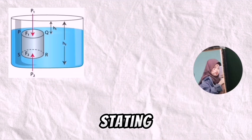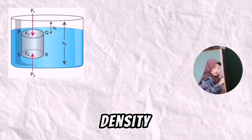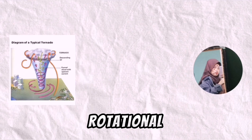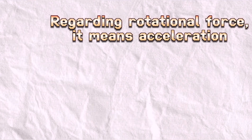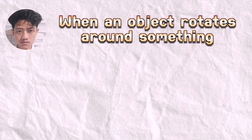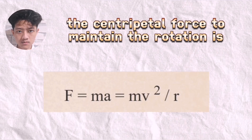Here is Archimedes' principle, stating that a body submerged in a fluid is buoyed up by a force equal to the weight of the fluid displaced. The relative density of an object compared to the fluid determines whether it sinks or floats. Additionally, there is the principle of angular momentum, rotational force, Coriolis force, and Bernoulli's principle. Regarding rotational force, acceleration is a change in velocity over a short amount of time: a = ΔV / ΔT. When an object rotates around something, the centripetal force to maintain rotation is F = ma = mv² / r.